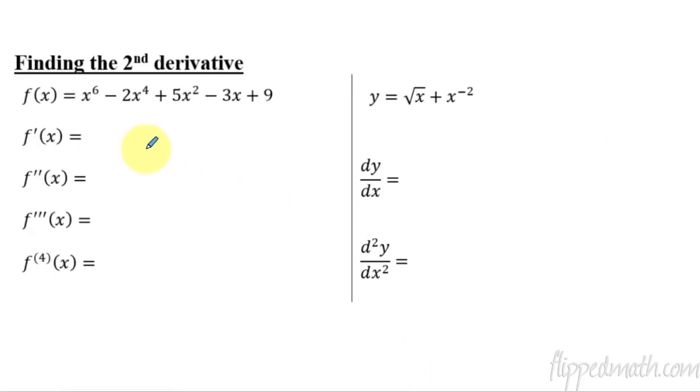Now let's actually take the derivative. So here we have a polynomial function, and if we take the first derivative, we're just going to use the power rule here. So 6x to the fifth minus 8x cubed plus 10x minus 3, and then the plus 9 becomes a zero because it's a constant. All right, so that's the first derivative.